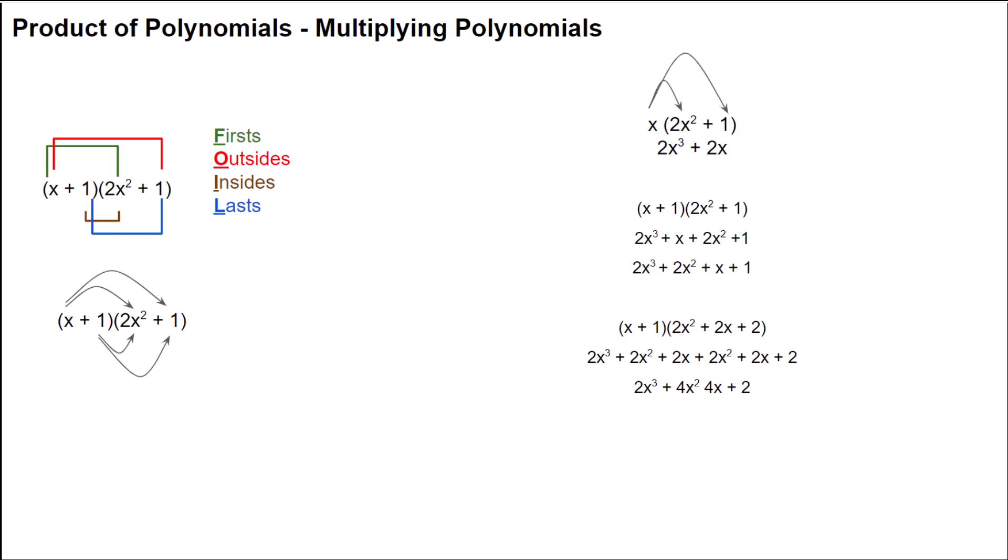Let's work a couple more problems to make sure we got the concept down. In this problem, we have the polynomial (x + 1) multiplied by (2x² + 1). If we take the first term of the first polynomial, which is x, and distribute that across each term of the second polynomial, we get 2x² times x, which equals 2x³, plus 1 times x, which equals x.